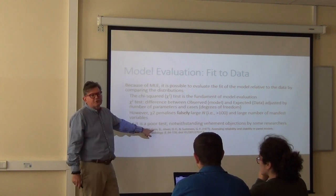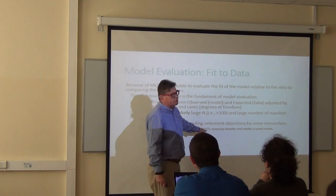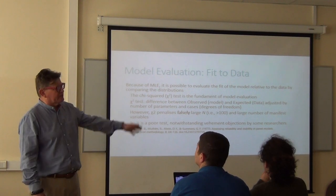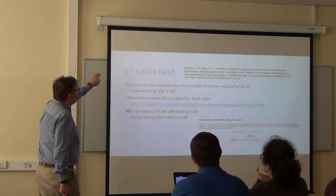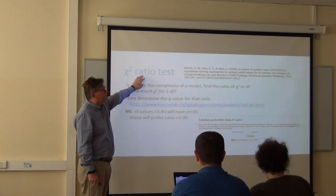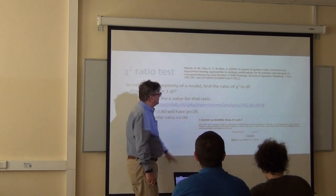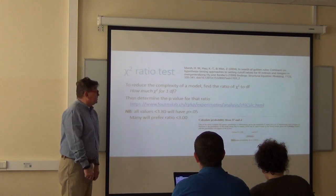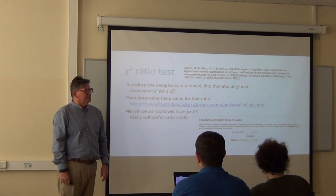Muthen and Bentler — the guy who invented M-plus — and his colleagues wrote an article in 1977 where they said that the Chi-square test is problematic. So they recommended the Chi-square ratio test. Herb Marsh and his colleagues also talk about it in that article in structural equation modeling, and it's basically really simple.